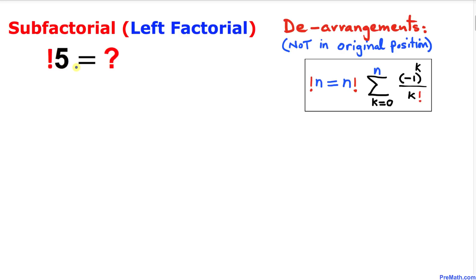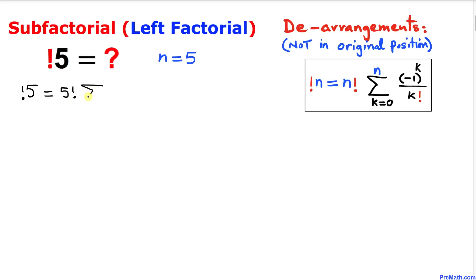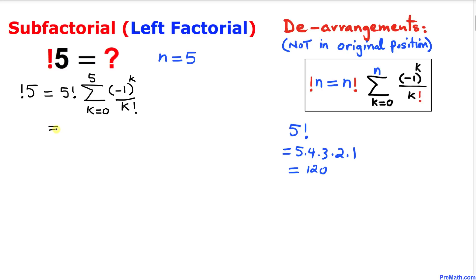Now let's calculate the sub factorial of 5. We apply the same formula with n equals 5. The sub factorial of 5 equals five factorial outside, then sigma with k going from zero to five of negative one to the power k divided by k factorial. Five factorial equals 120.